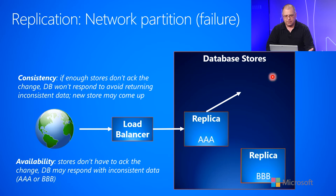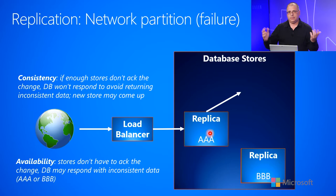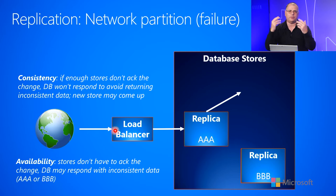An alternative: if you care more about availability instead of consistency, you could say this store that went down didn't acknowledge the change, and it doesn't have to. So now we have AAA somewhere and BBB somewhere, and we respond back to the caller saying we got your BBB. That replica could update to BBB eventually, but it's possible you could get AAA or BBB back depending on which replica you talk to. So you've lost some consistency between the various stores.